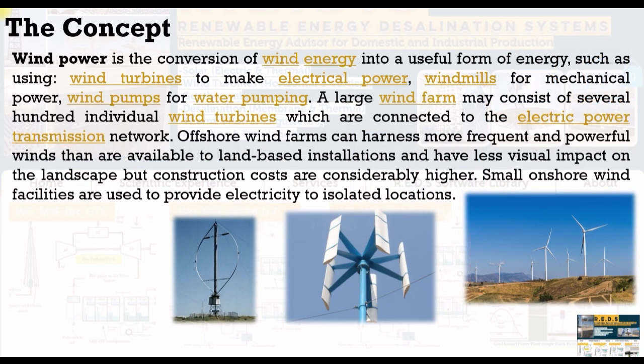First of all, wind power is a conversion of wind energy into a simple form of energy, such as using wind turbines to make electrical power, wind turbines for mechanical power, wind pumps for water pumping. A large wind farm may consist of several hundred of individual wind turbines which are connected to the electric power transmission network. Offshore wind turbines can harness more frequent and powerful winds than are available to land-based installations and have less visual impact on the landscape, but construction costs are considerably higher. Smaller insured wind facilities are used to provide electricity to isolated locations or remote areas.